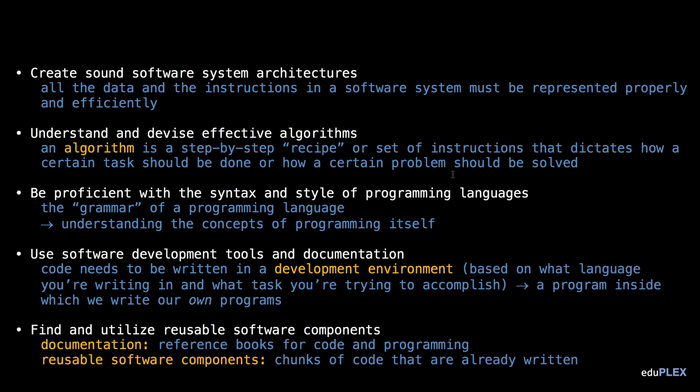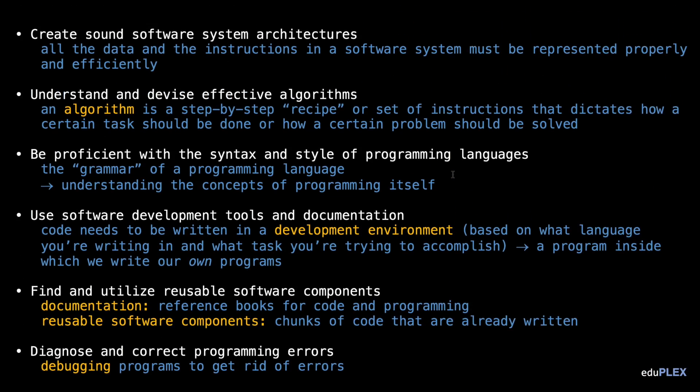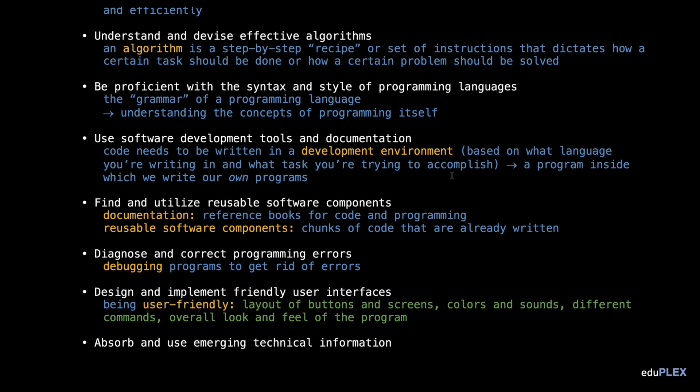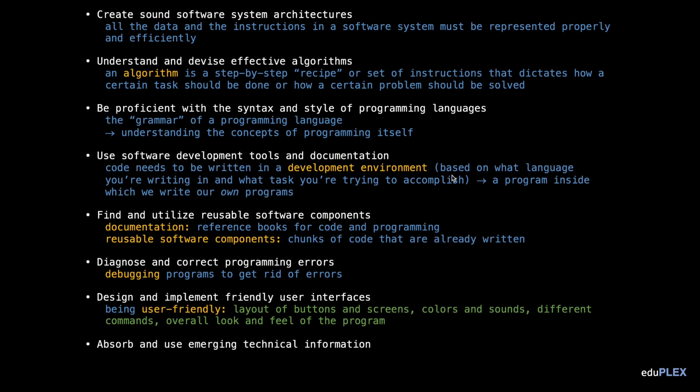So that's a lot of responsibilities. Like any field in the real world, software engineering requires an understanding of a lot more than just info you'd find in a textbook. It encompasses the development of system architectures, the creation of effective algorithms, fluency in programming languages, debugging of computer programs, understanding of development tools, and the ability to cater products to clients and users. The term 'software engineer' itself is a big category of a lot of different types of jobs.